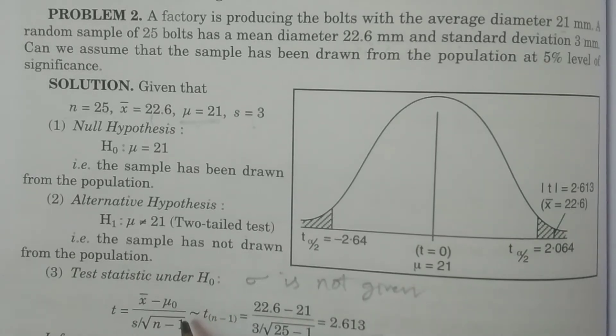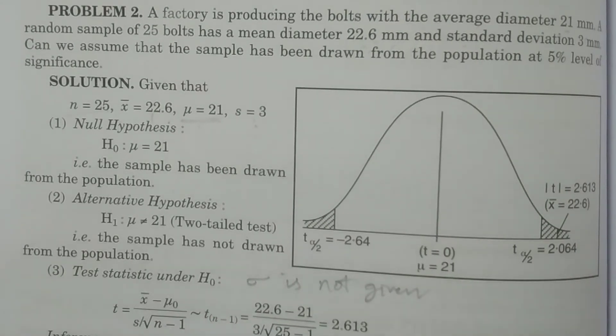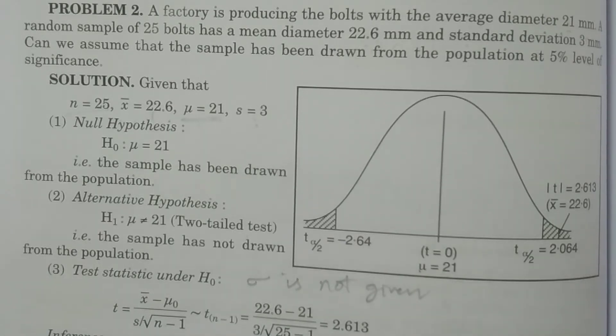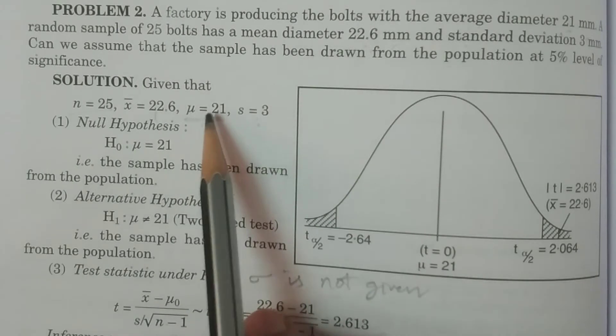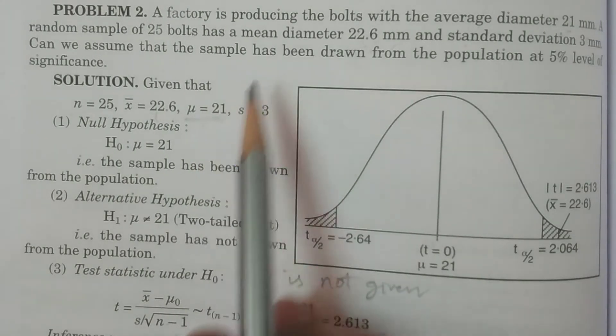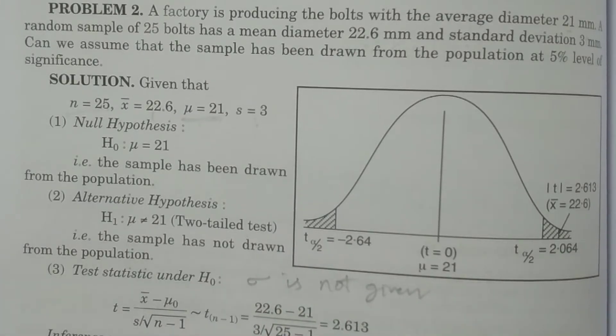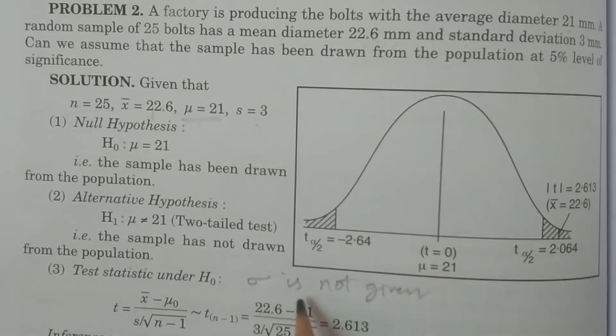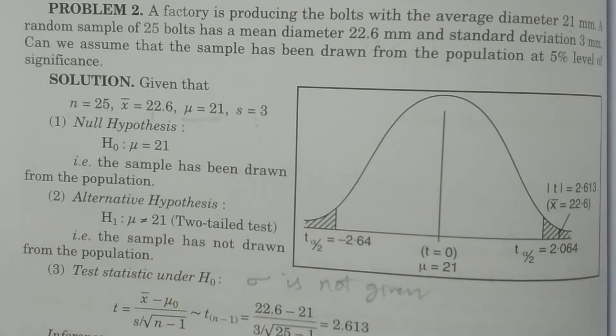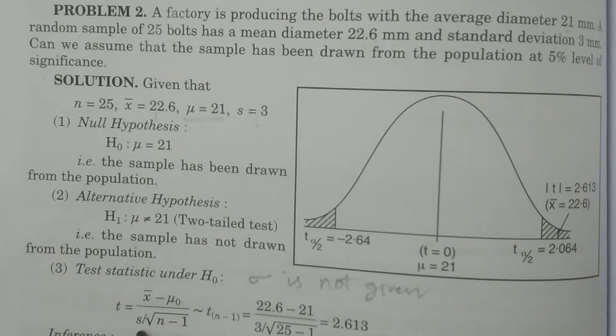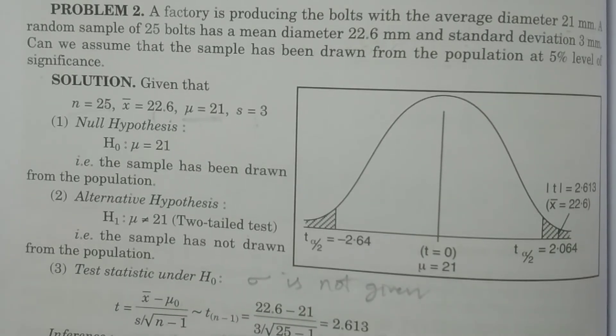Now, test statistic under H0. Here we have to observe two particular cases, whether sigma is known or sigma is not known. Here sigma is not given, not known. Sigma is not given in the problem. Therefore, sigma is not given or not known. And if sigma is not known, if sigma is known, we use the normal distribution test statistic under H0. If sigma is not known, test statistic under H0, we use t distribution. t is equal to x bar minus mu naught by s by root n minus 1, which follows t n minus 1.